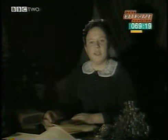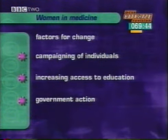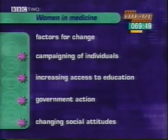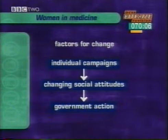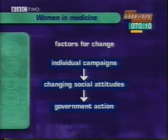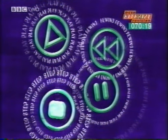'I believe that if a single woman desires to consult a physician of her own sex, and if one other woman desires to qualify herself to be that physician, no person whatever has the right to interfere with such legitimate desires.' Your list of factors may have included the campaigning of individuals, increasing access to education for women, government action and changing social attitudes. Whichever you thought was most important, you should stress the way they interact — individual campaigns brought the issue to public attention, helping to change social attitudes, and in response to this, government passed new laws. That's the end of the section on women and medicine.